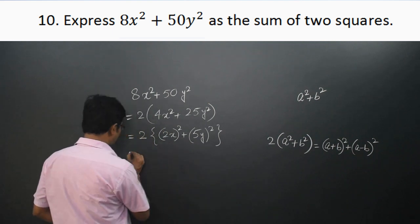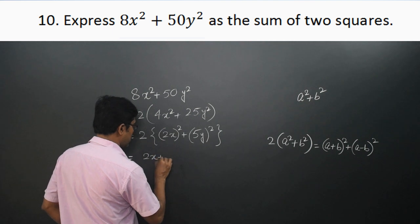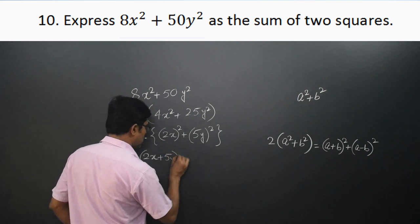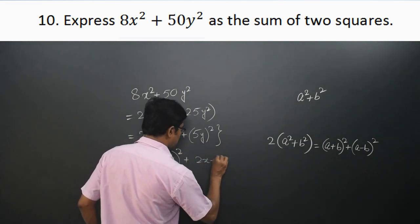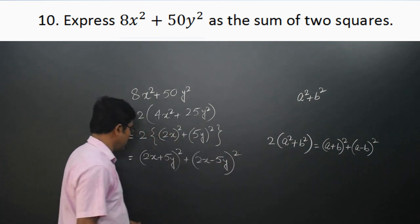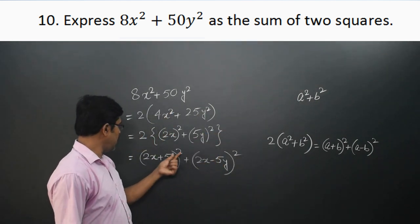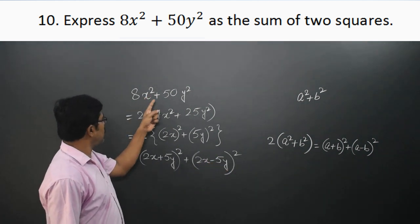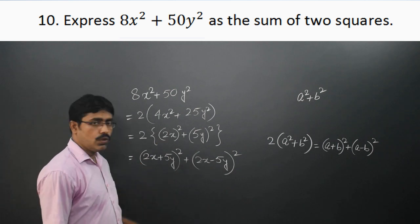So 8x² + 50y² can be written as (2x + 5y)² + (2x − 5y)². This is of the form A² + B², so 8x² + 50y² is expressed as the sum of 2 squares.